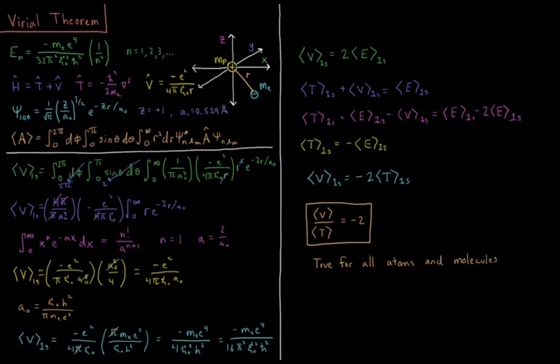Starting with our hydrogen atom quantum mechanical model, we have a proton fixed at the origin with charge plus e and mass mp. We have an electron free to roam around in three-dimensional space with mass me and charge negative e, some distance r away from our proton in spherical polar coordinates. It's more convenient to express our wave function in spherical polar coordinates because our potential only depends on r.